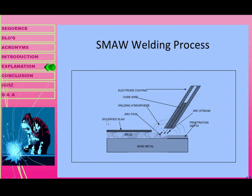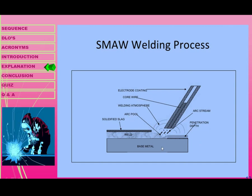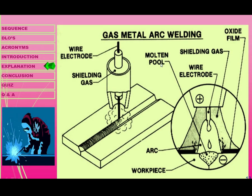In Shielded Metal Arc Welding, there is a solidified slag on the base metal. The penetration depth is defined, and by utilizing the electric coating and core wires, a welding atmosphere is created. An arc is provided into the weld pool to fuse the two metals — the core wire and the electrode coating are fused together — resulting in a good joint of metals.